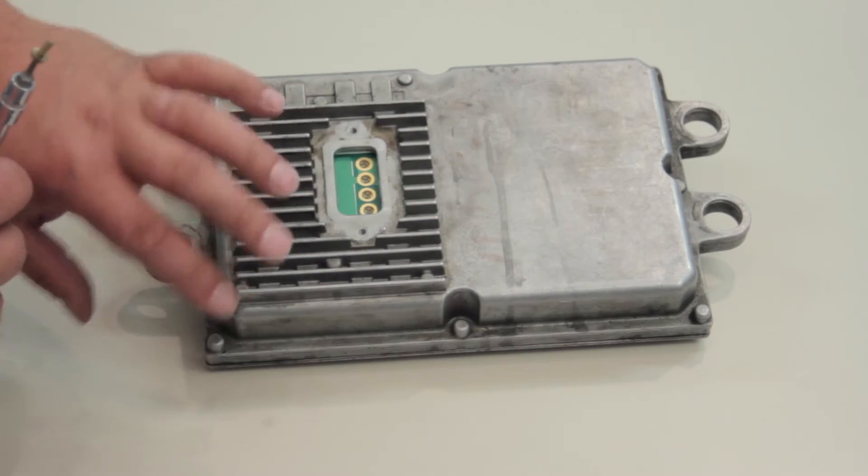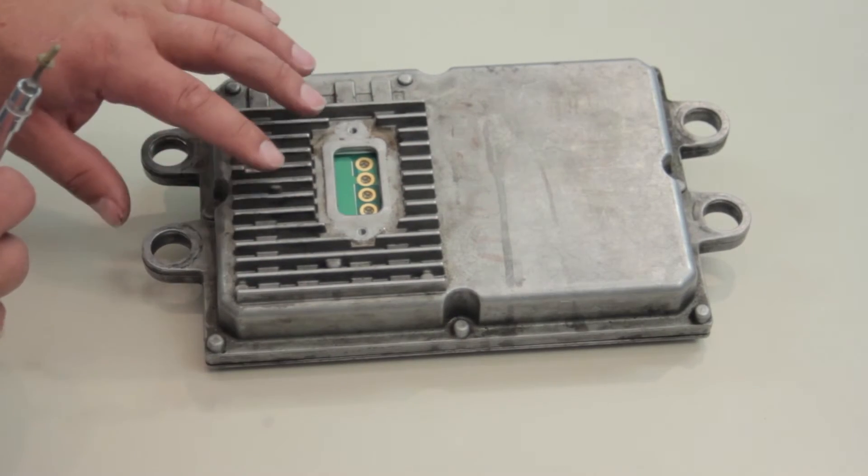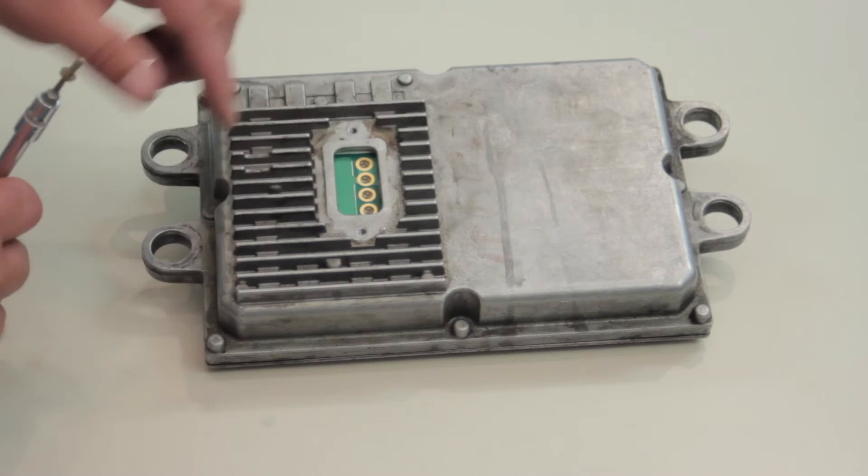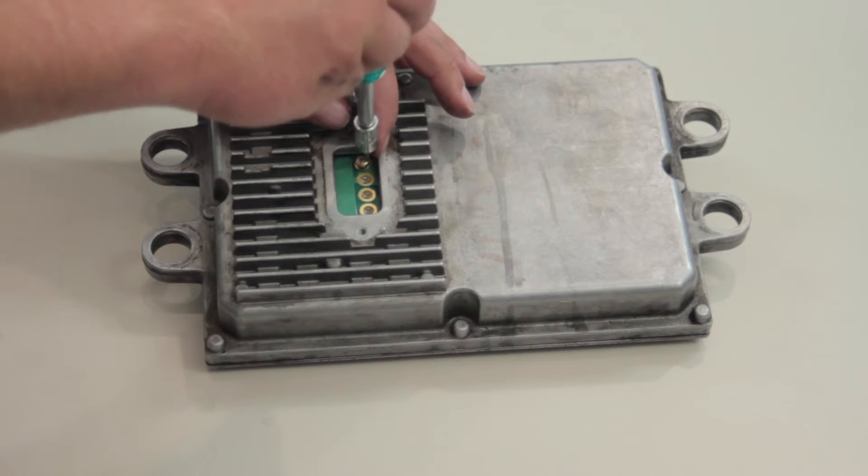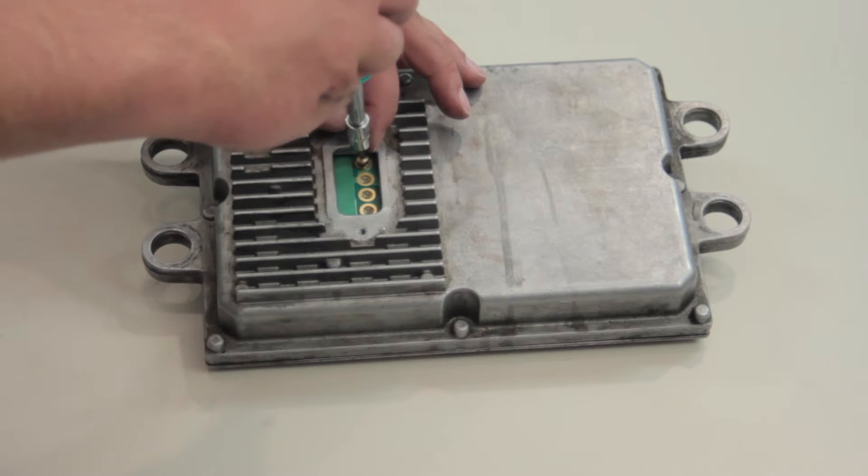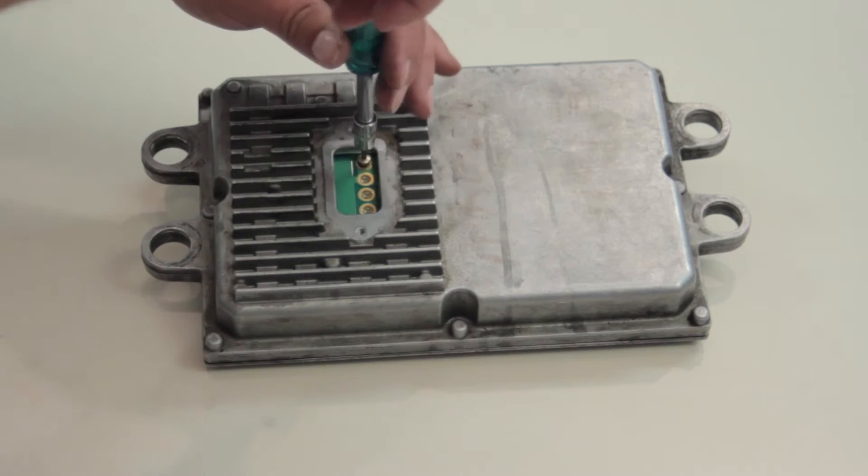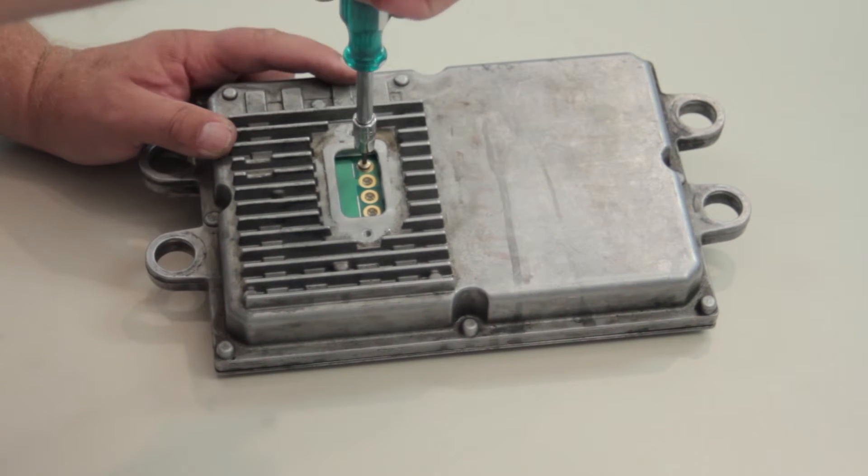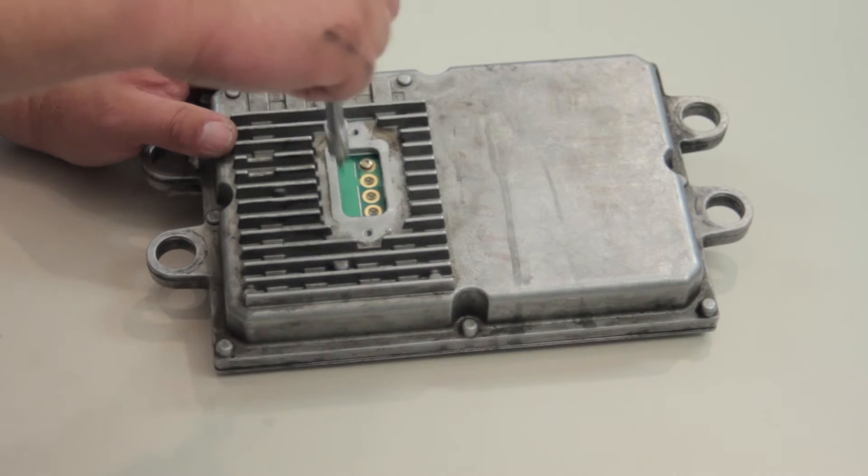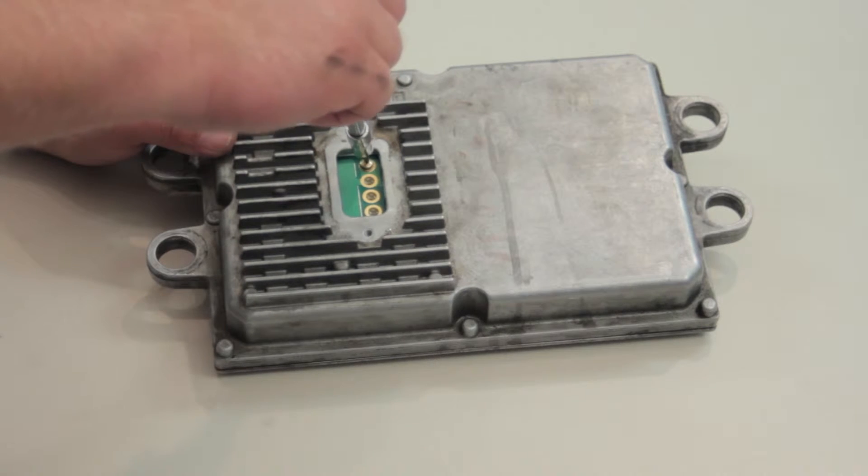Now we've got our halves put back together. I've flipped the FICM back upside down and we've got our four screws we need to reinstall on the back side here. So I'm going to use my Torx driver again and gently snug up these bolts. We don't want to over tighten them. We might run the risk of cracking the circuit board but they need to be good and tight.